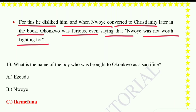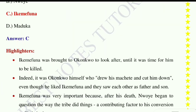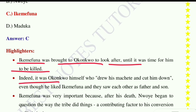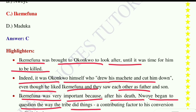Question number thirteen: What is the name of the boy who was brought to Okonkwo as a sacrifice? Option A: Seudu, option B: Nwoye, option C: Ikemefuna, option D: Maduka. The correct answer is option C, Ikemefuna. He was brought to Okonkwo to look after until it was time for him to be killed — indeed it was Okonkwo himself who drew his machete and cut him down. Even though he liked Ikemefuna and they saw each other as father and son, Ikemefuna's death caused Nwoye to begin questioning the ways of the tribe, contributing to his conversion to Christianity.